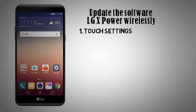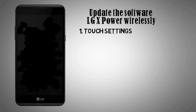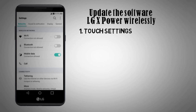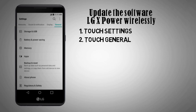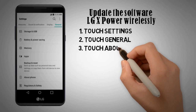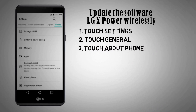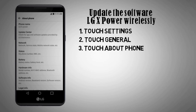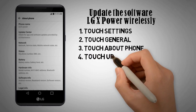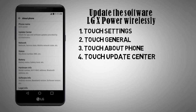Step 1: Touch Settings. Step 2: Touch General. Step 3: Scroll to and touch About Phone. Step 4: Touch Update Center.